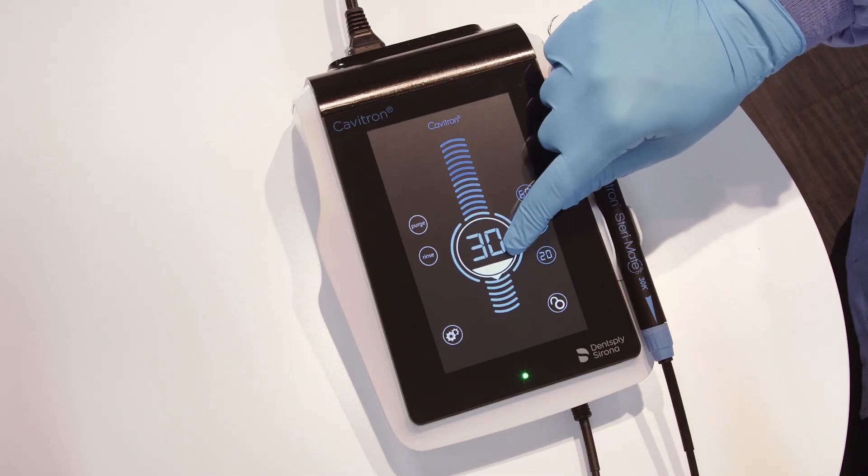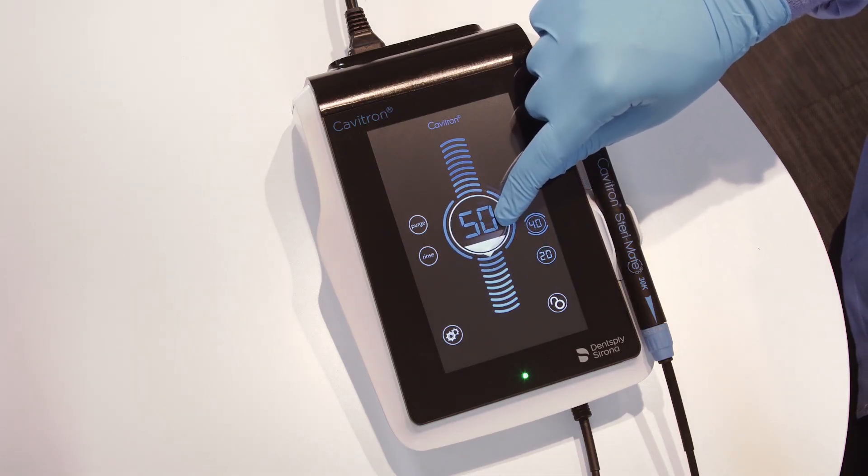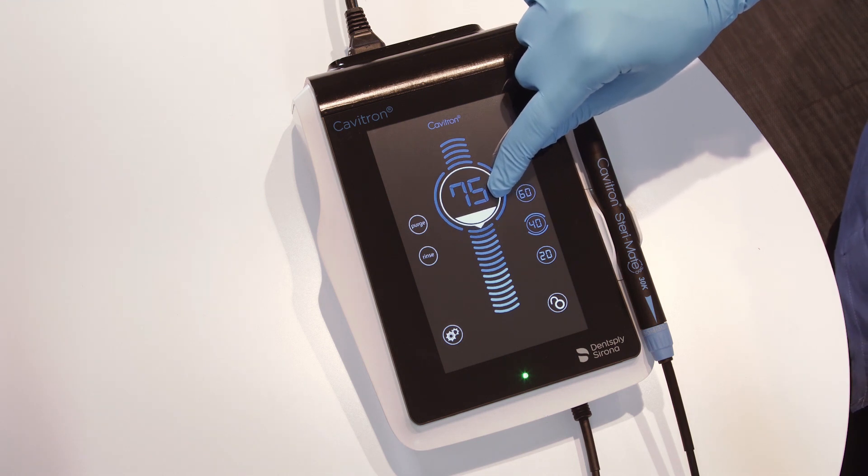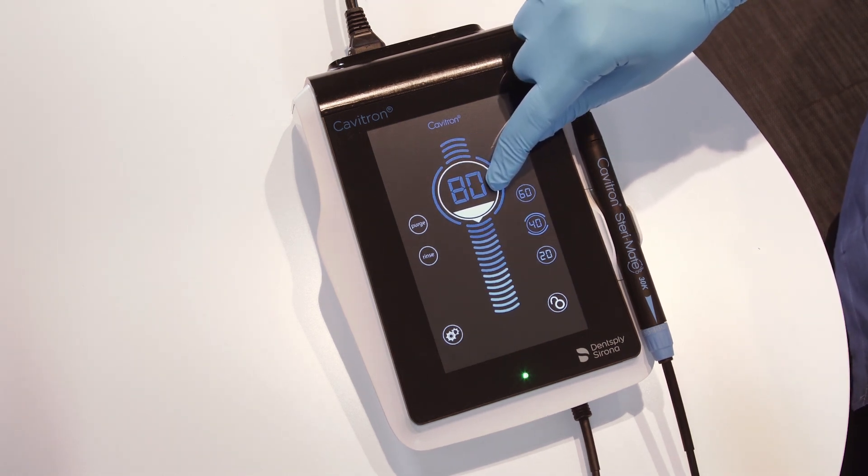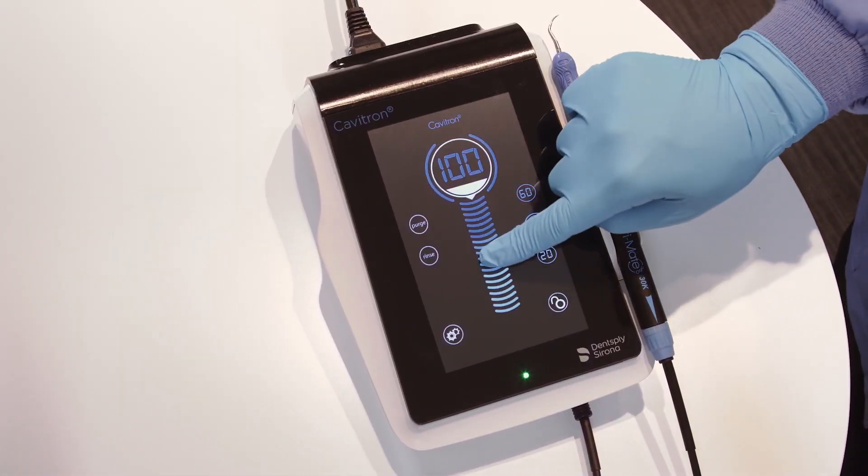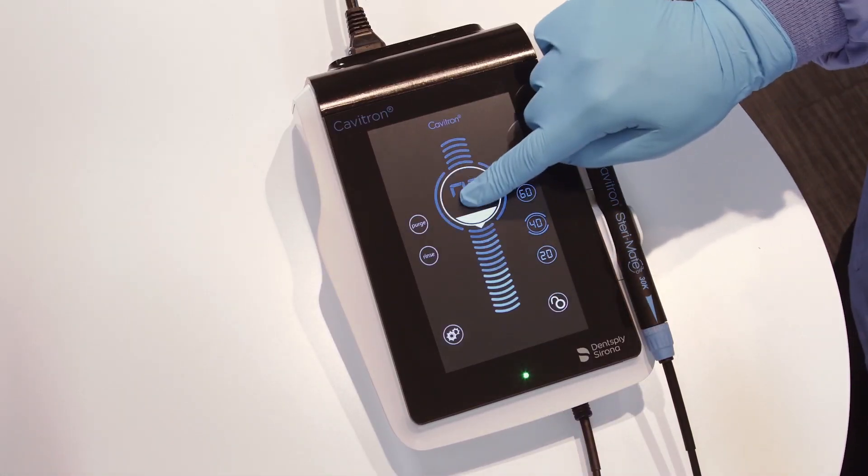To control the ultrasonic power level, simply slide to select your desired power level. Sliding up increases the power, while sliding down decreases the power. A power level may also be selected by tapping the desired position on the power scale.